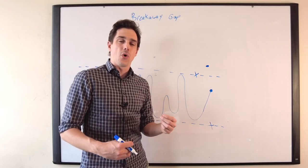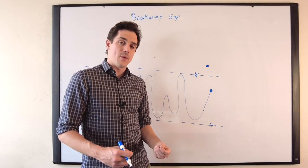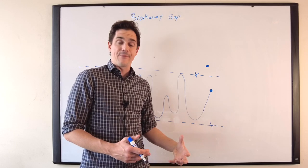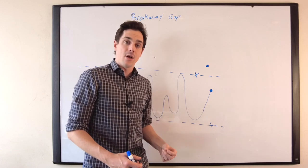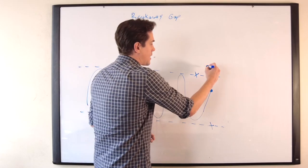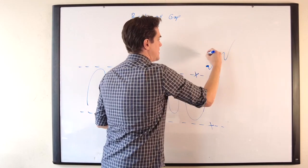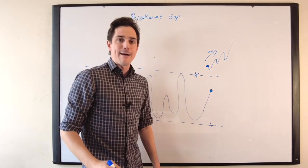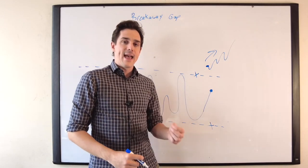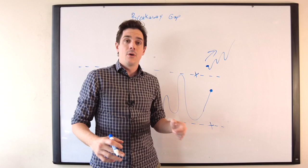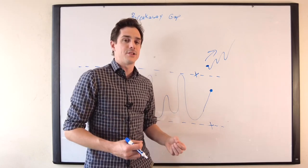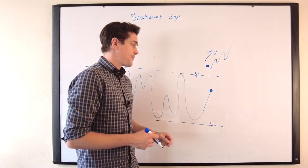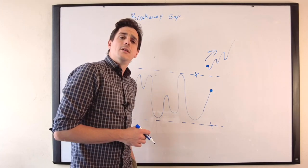Breakaway gaps tend to lead to what's called a gap and go situation, which is the opposite of a gap fill. The gap fill is when the price comes down and fills the gap. A gap and go is when your stock trends in the direction of the gap itself. Like with any type of gap, to understand this we want to understand the supply and demand implications.